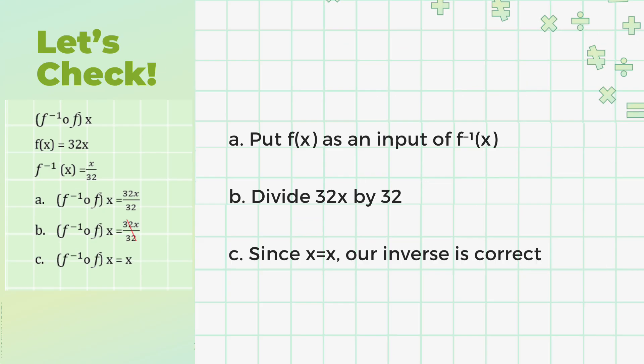Let's check it again by putting f(x) as an input of f inverse of x. Divide 32 by 32. Since 32x divided by 32 leaves us with only x, hence our inverse is correct.